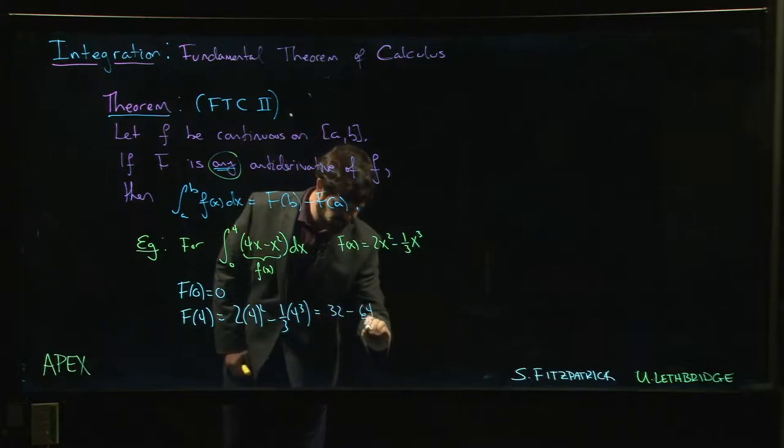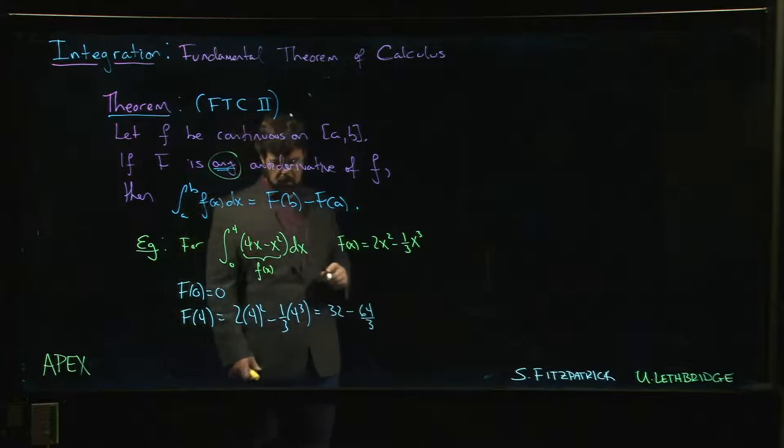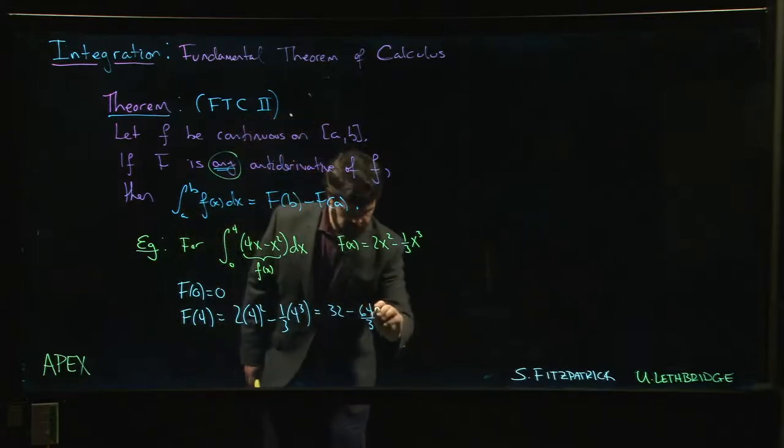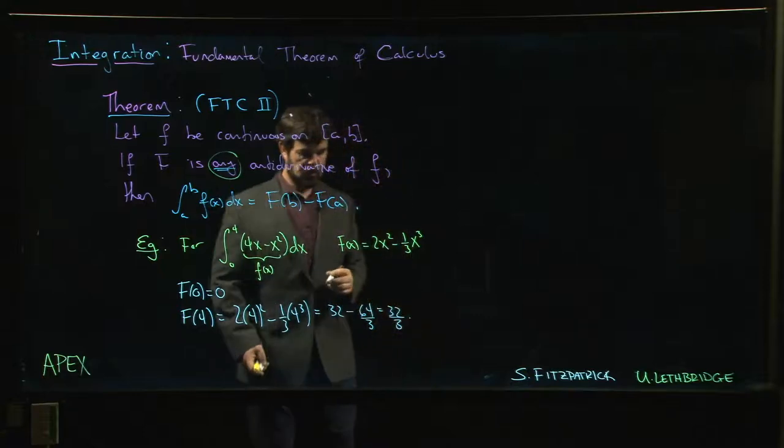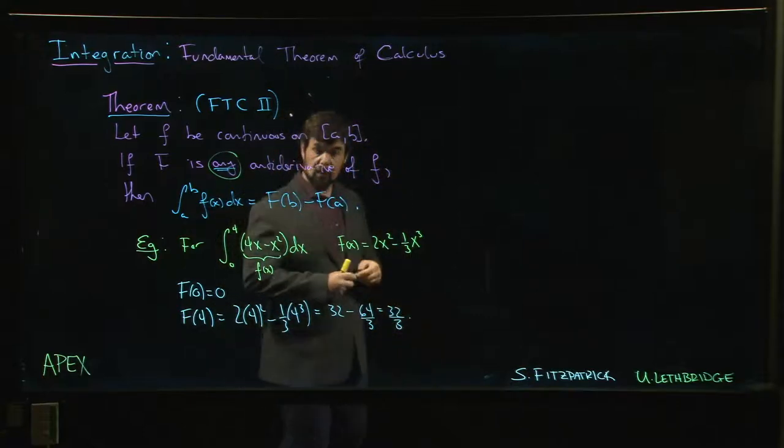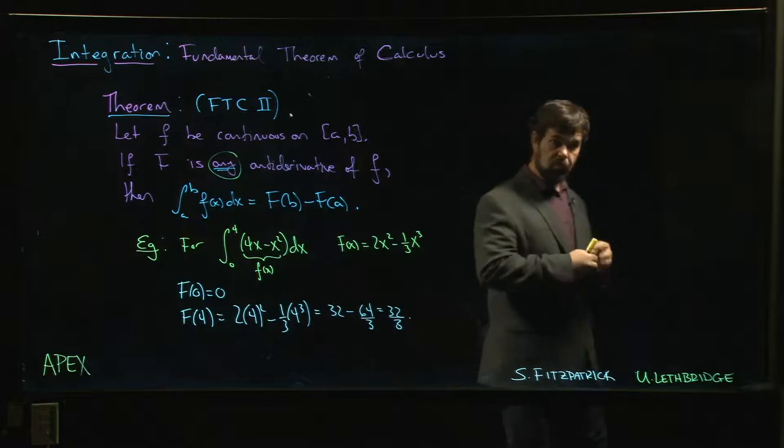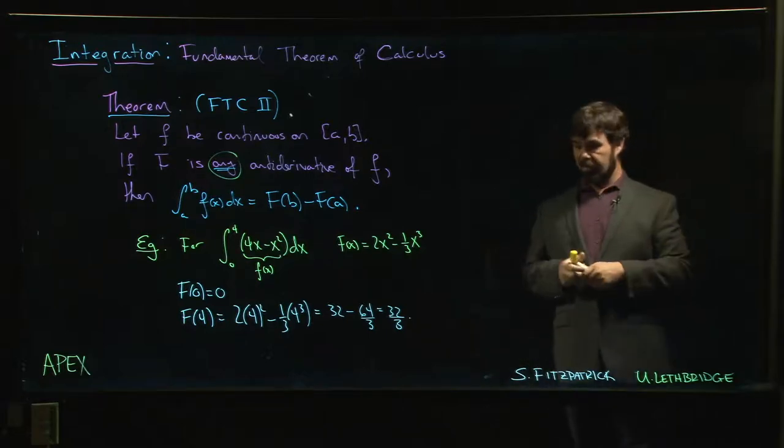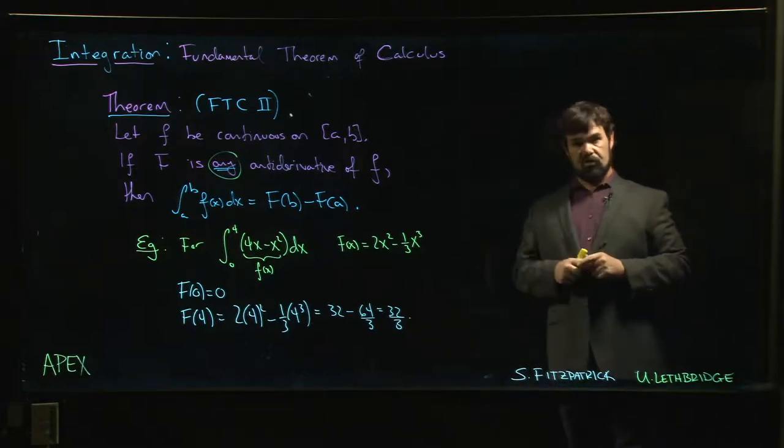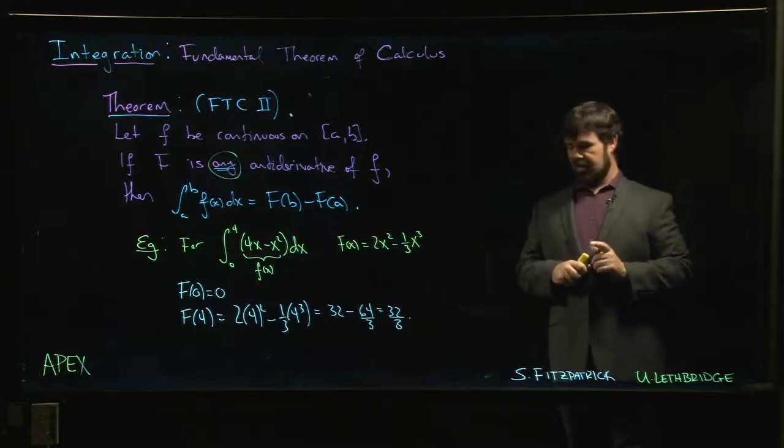Minus 64 over 3, okay, which is 32 over 3. All right, and if you go back and look at the results that we had using Riemann sums in the previous section, that should look like a fairly familiar result.